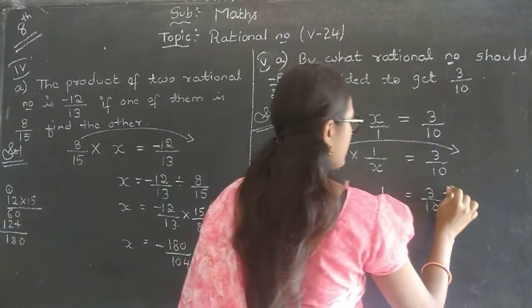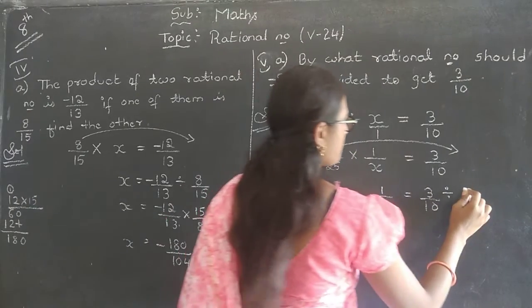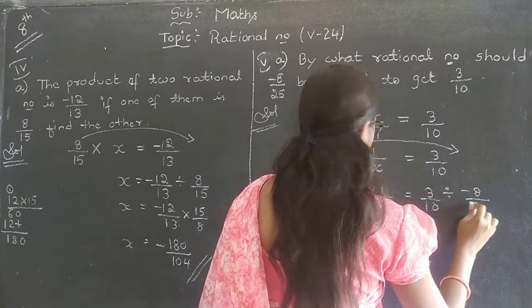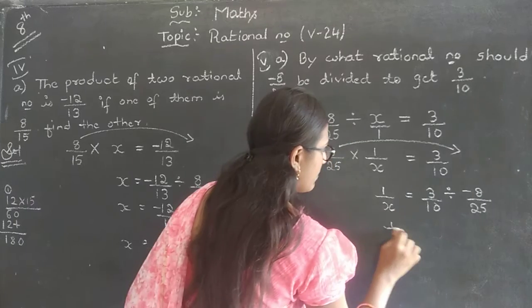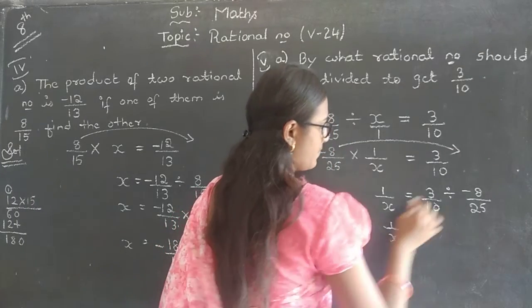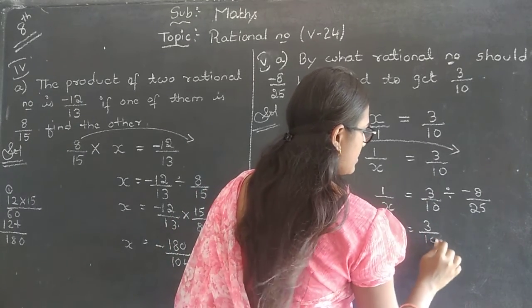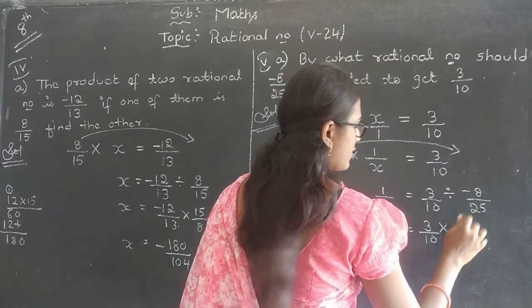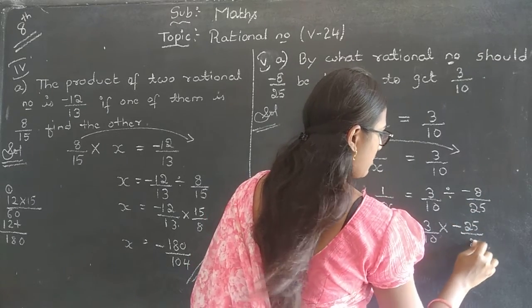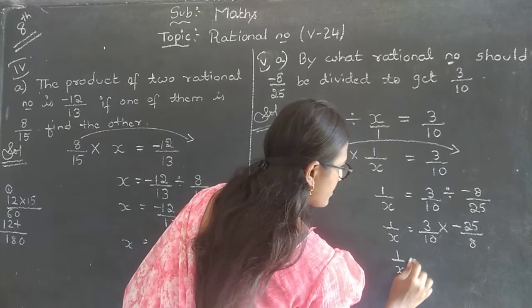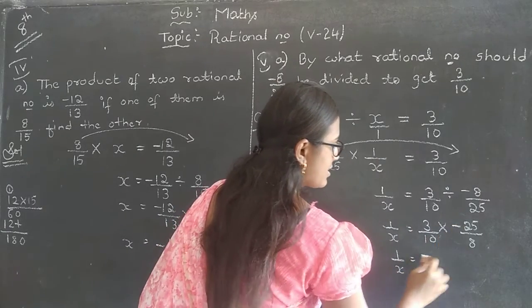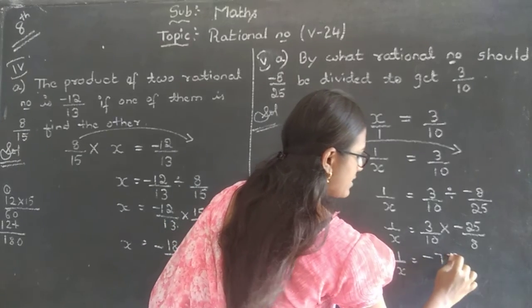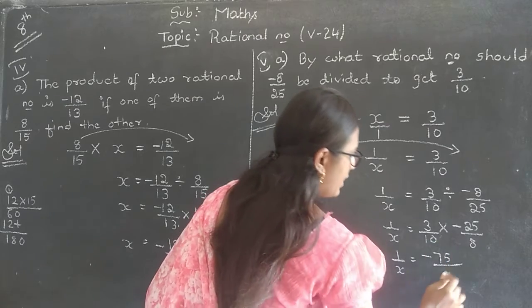Now, I want x now. Let me keep it here only. Let me shift this to this side. So, 1 by x is equal to 3 by 10. Into and shifting to RHS, it will become divided by minus 8 by 25. 1 by x is equal to 3 by 10. Divisor symbol will change into, take the reciprocal of second one. That is minus 25 by 8.